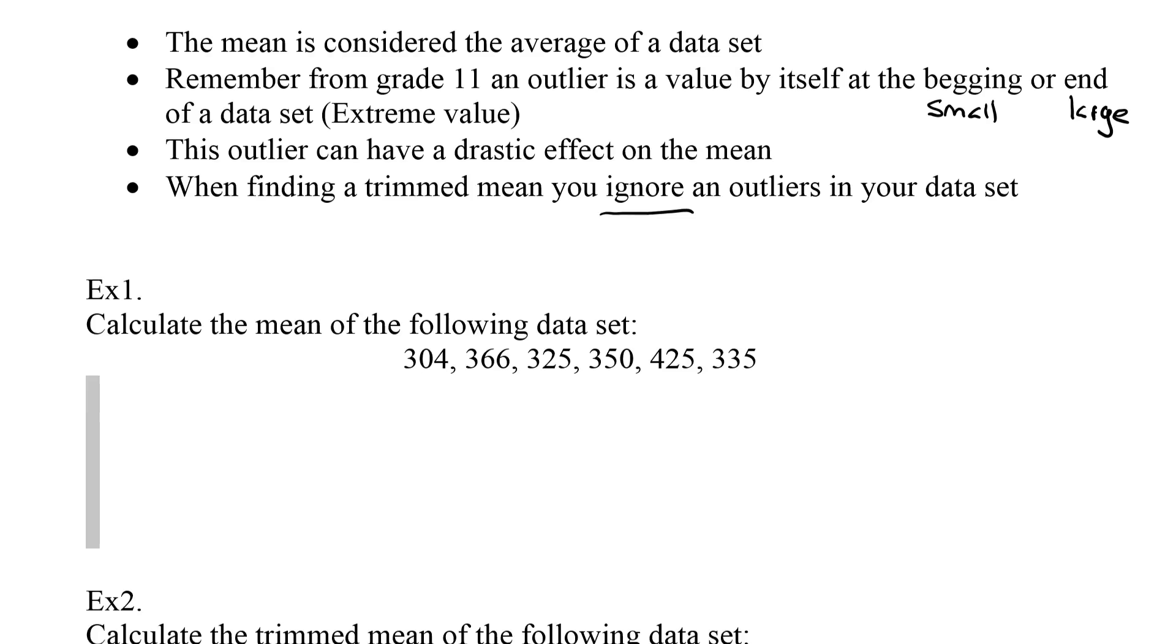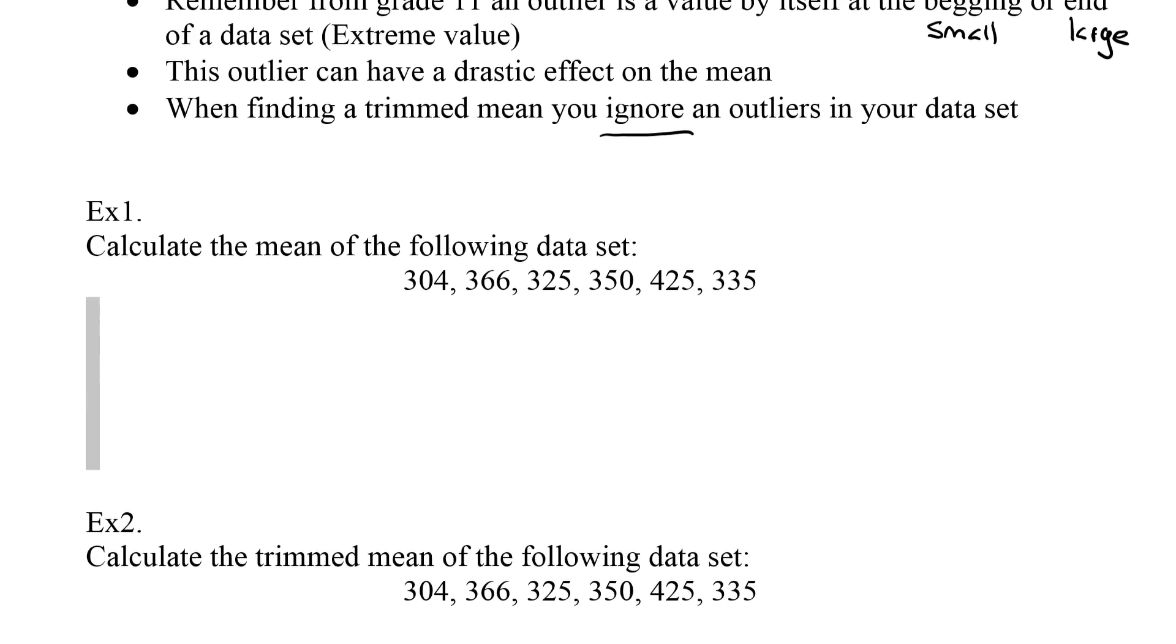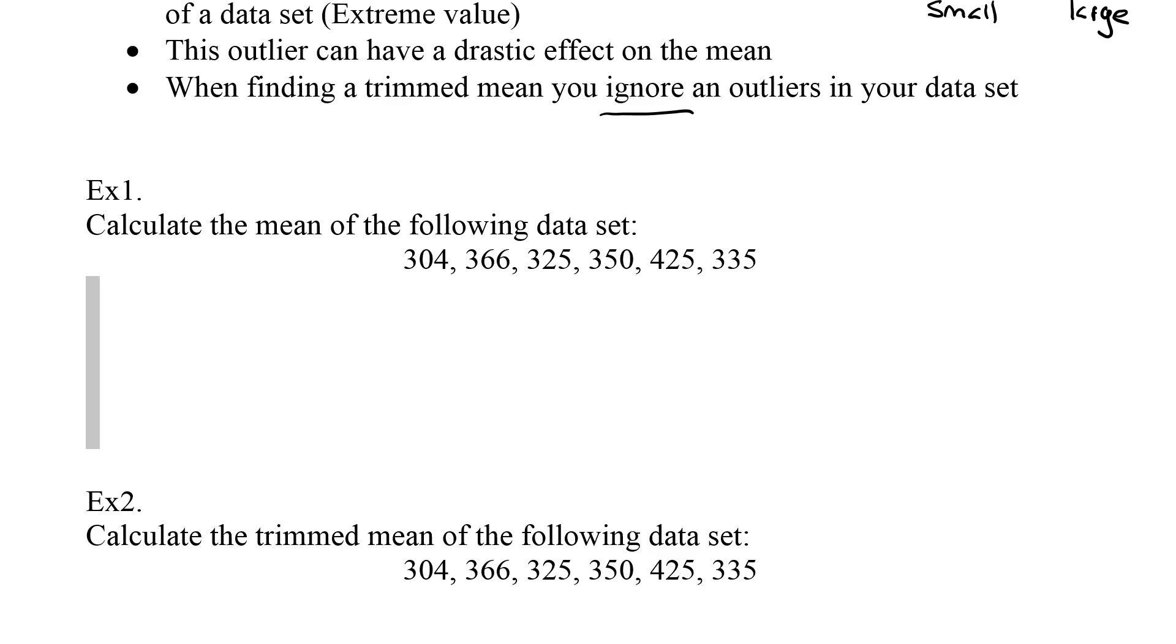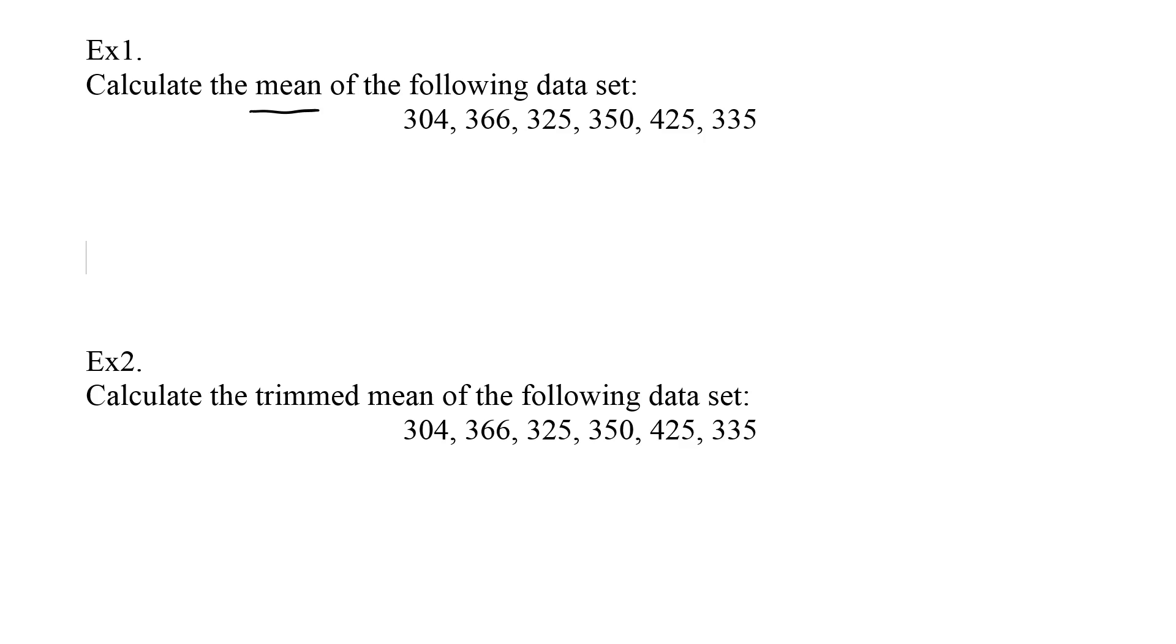So let's look at how we can do a trimmed mean. We'll start off with example number one. Example number one is calculate the mean of the following data set. This is mean, this is what we've been doing for a while. We're going to go through this just to see how those outliers affect it. So the first thing I do is I take these numbers and I add them together.